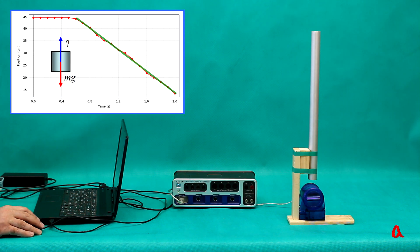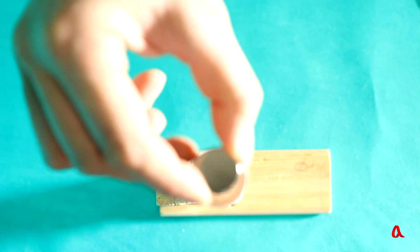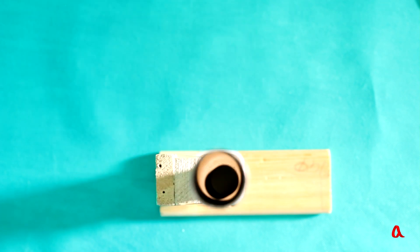What force balances the force of gravity? Could it be the force of friction? Let's look at the tube from above. One can see that the falling magnet hardly touches the walls, so friction can definitely be ruled out in this case.